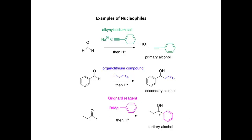So we can use a range of different organometallic reagents in these reactions: alkynyl sodium salts, organolithiums, Grignard reagents. We can also use a range of carbonyls — methanal, a range of aldehydes, a range of ketones. This gives rise to a variety of different alcohols, and that's why this reaction is so useful in synthesis.